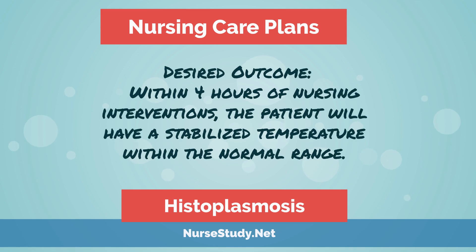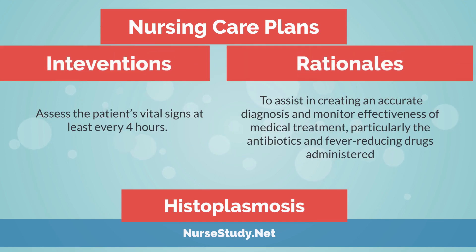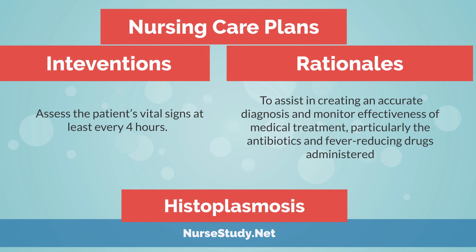Desired Outcome: Within 4 hours of nursing interventions, the patient will have a stabilized temperature within the normal range. Intervention: Assess the patient's vital signs at least every 4 hours. Rationale: To assist in creating an accurate diagnosis and monitor effectiveness of medical treatment, particularly the antibiotics and fever-reducing drugs administered.